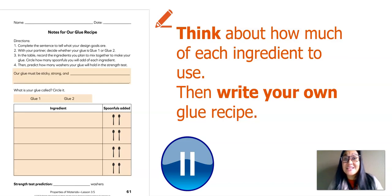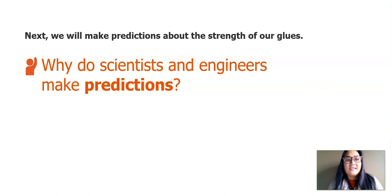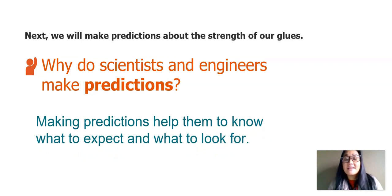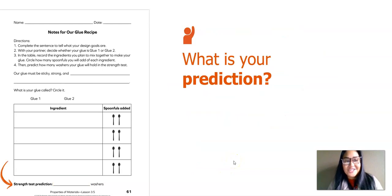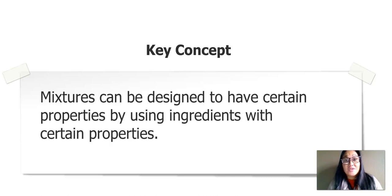Ready to move on? In this next part of our lesson, we will make and discuss predictions about the strength of our glues. Why do scientists and engineers make predictions? They make predictions to help them know what to expect and what to look for. Based on what you observed, how many washers do you predict your glue will hold? Go ahead and pause this video and record your prediction — maybe 10, 20, or 30? Here are two more key concepts: mixtures may have a combination of properties of their ingredients, and mixtures can be designed to have certain properties by using ingredients with certain properties.